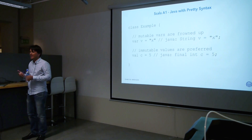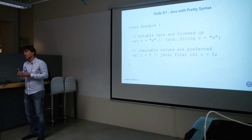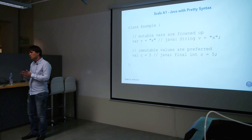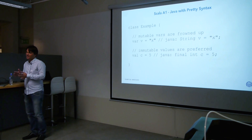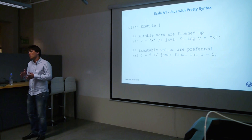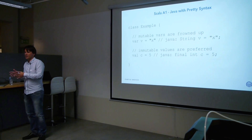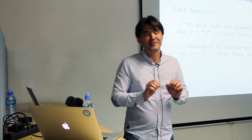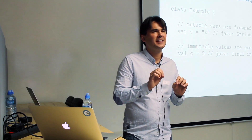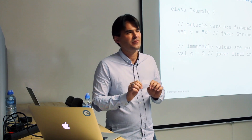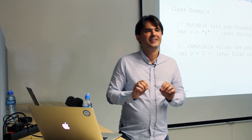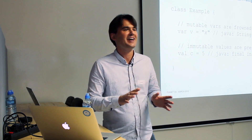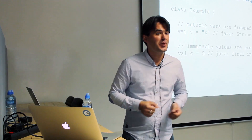Scala is kind of a gateway drug. You start programming in a very Java object-oriented style and then slowly move towards having less mutable variables and more final immutable values. Once you reach enlightenment, what happens is that if your program compiles, very often it actually is correct — which is a nice thing. That's just my opinion.